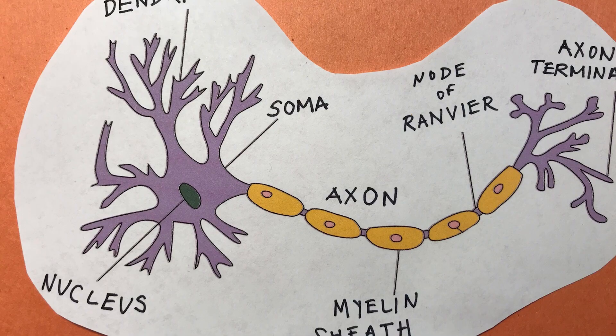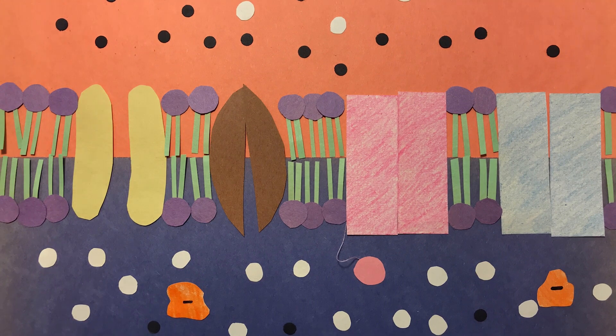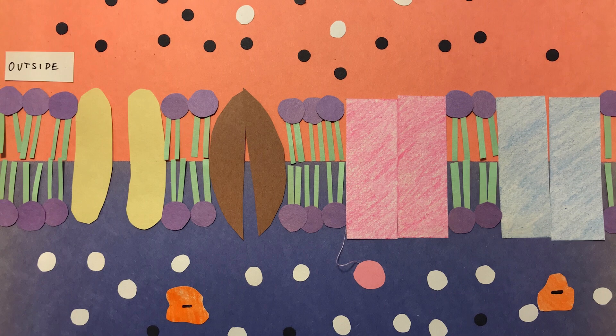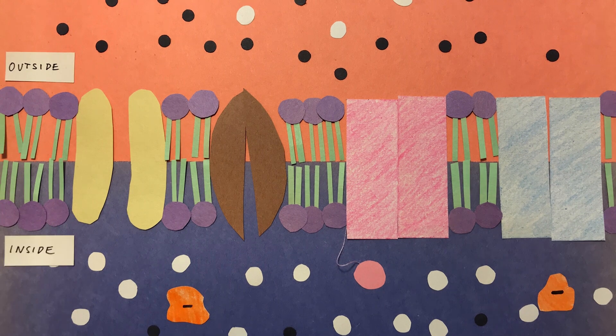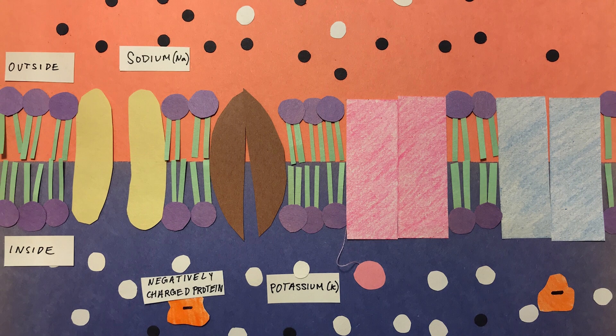Now if we zoom in, we can better understand the signals that pass through the neurons. Here we have the neuron at rest. The orange represents the outside of the cell, and the blue represents the inside of the cell. Outside of the cell, there is a high concentration of sodium ions, which are positively charged. And inside of the cell, there is a high concentration of potassium ions, which are also positively charged.